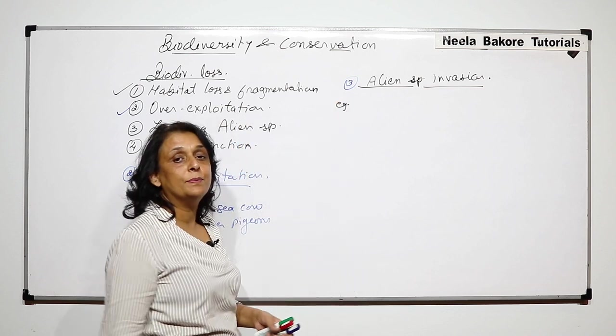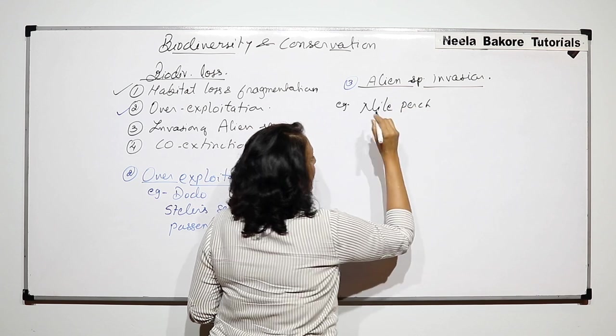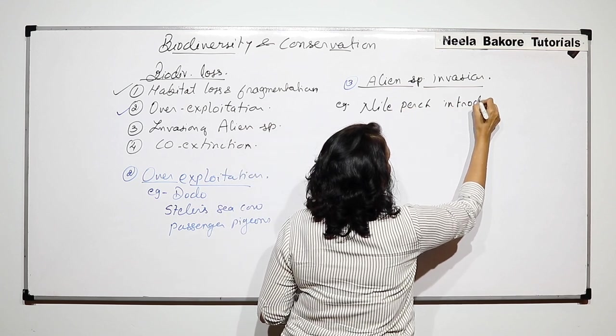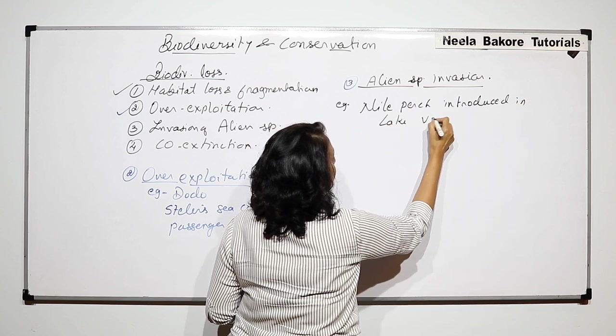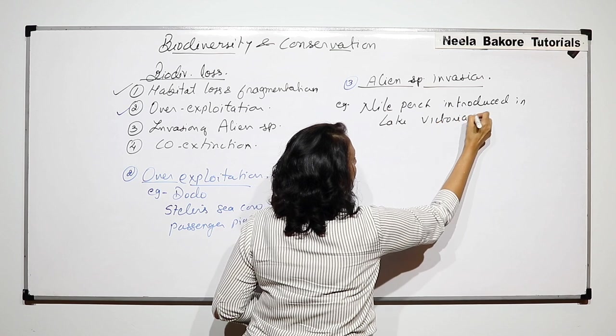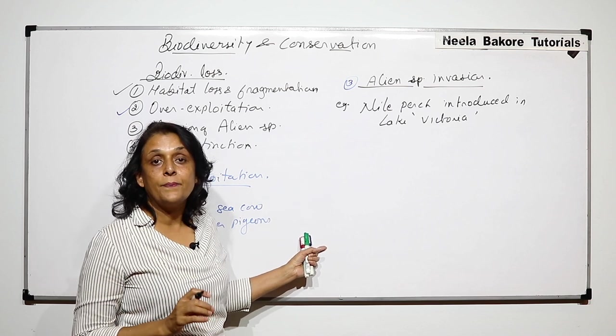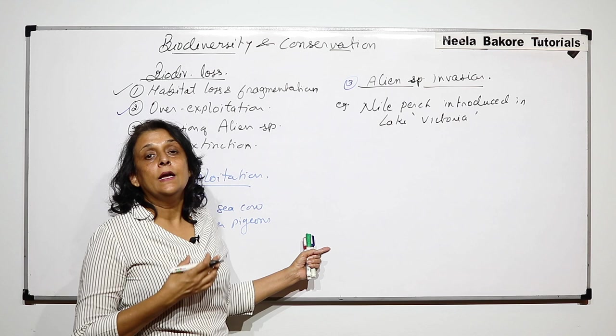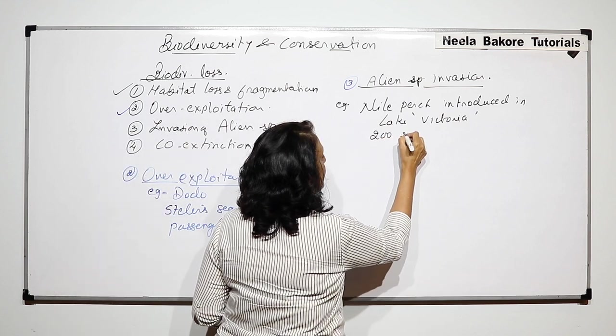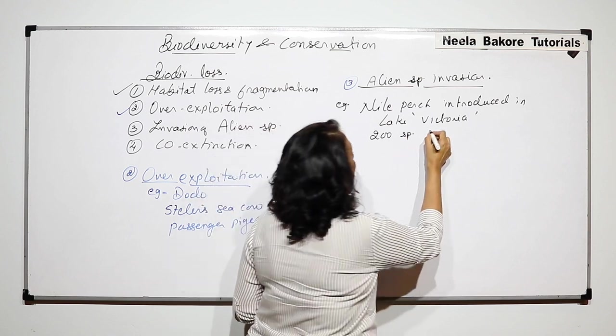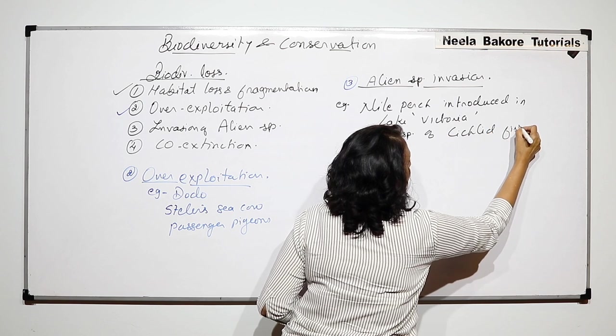Few important examples: Nile perch introduced in Lake Victoria. Nile perch was an alien species for Lake Victoria and they reproduced there. Their number increased so much that 200 species of local cichlid fish got extinct.